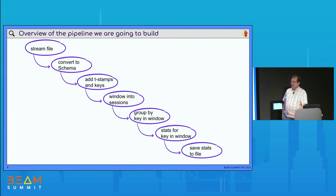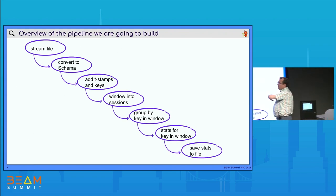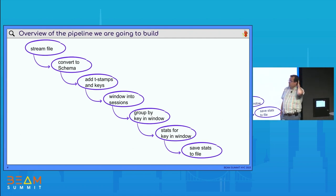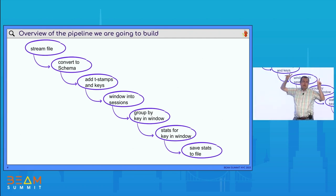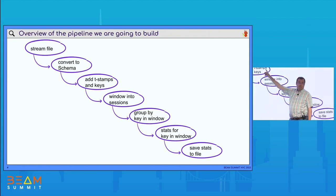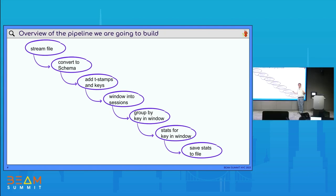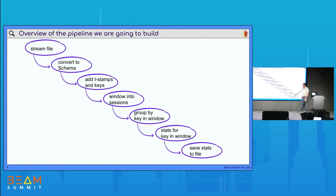Enough introduction to theory — let's start with the workshop. This is more or less the pipeline we're going to be writing. We're going to have a file that is going to be a stream. We'll convert it to schemas, add timestamps — really important — and then add keys, because windows are grouped not only per timestamp but also per key. Then we'll add a window, apply some processing, calculate statistics, write to file, and then visualize it.